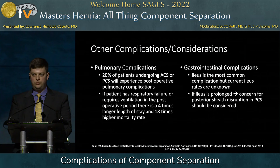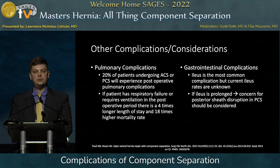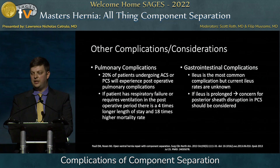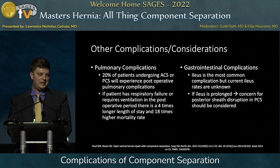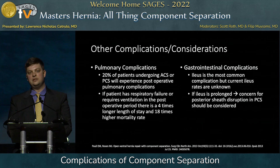Regarding pulmonary complications: we're taking care of patients who often have higher-than-average baseline intra-abdominal pressures because they're obese. When you repair them, you're further limiting intra-abdominal space and increasing intra-abdominal pressure — essentially causing near intra-abdominal hypertension. Twenty percent of patients undergoing anterior or posterior component separations will have some pulmonary complication. Respiratory failure requiring ventilation is associated with a four-times-higher length of stay and an 18-times-higher mortality rate. If you're seeing these complications, you likely didn't release enough muscle and had too much tension on your closure. Pay close attention to pulmonary status and intervene early.